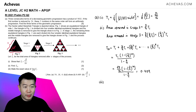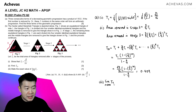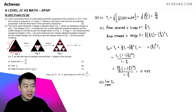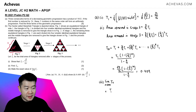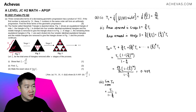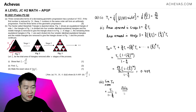In part 3, the limit as N tends to infinity of TN means we need the sum of the GP to infinity, where the first term is T1 equals root 3 over 16 and the common ratio is 3/4. Using the sum to infinity formula: T1 divided by (1 minus 3/4) equals (root 3 over 16) divided by (1/4), which gives a final answer of root 3 over 4.